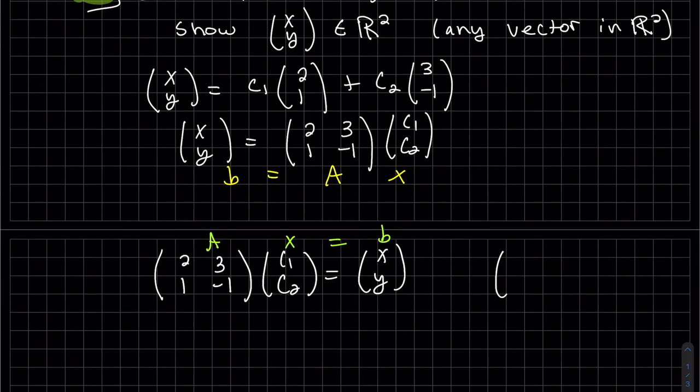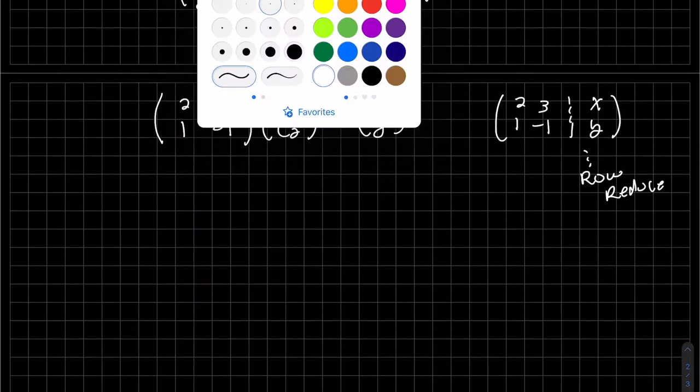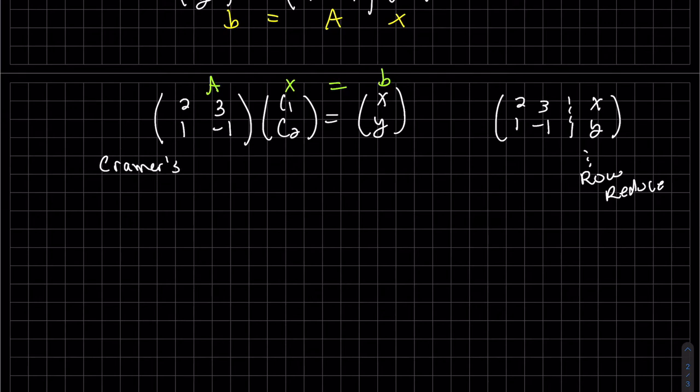So if we wanted to augment it and then row reduce to solve, again, this is our equation. This is my B that I augment it with. And then I would be solving the equation C₁ and C₂. I'm going to use Cramer's, or at least see if I could use Cramer's. Yeah, so we are able to use Cramer's because that is not 0.